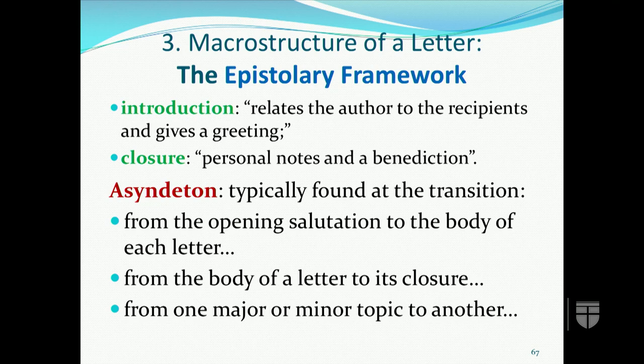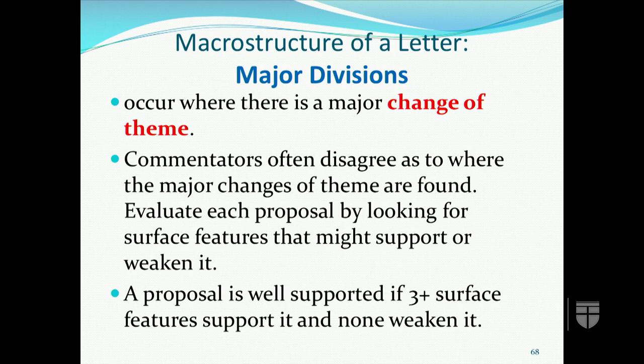A syndetin — the lack of a sentence conjunction — is typically found at the following transitions: from the opening salutation to the body of each letter, from the body of the letter to its closure, and from one major or minor topic to another where there's no reason to have a connection between the major divisions. We expect the major divisions of the body of the letter to occur where there's a major change in theme. Since commentators often disagree about where major changes of theme are found, we can evaluate each proposal by looking at the surface features or boundary features that might support or weaken it. A proposal is well supported if three or more surface features support it and none weaken it.